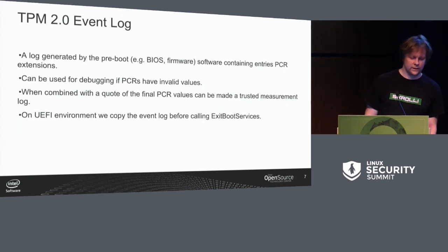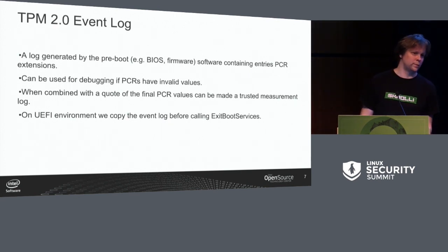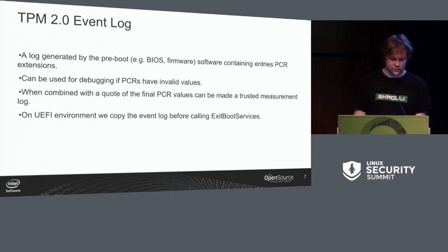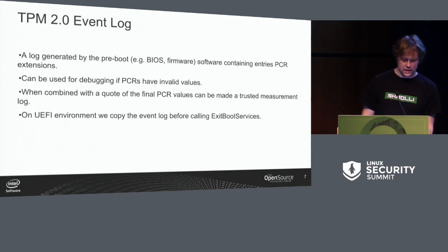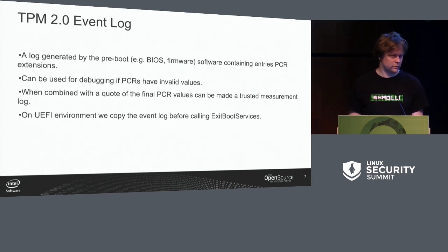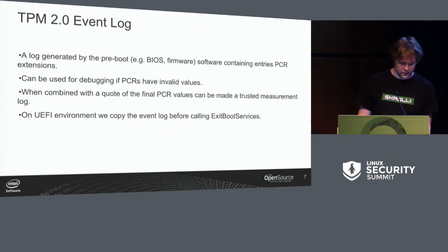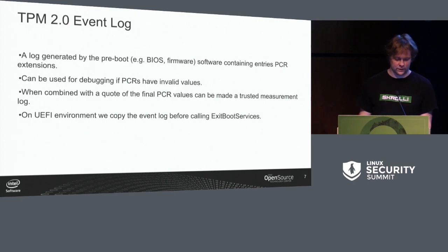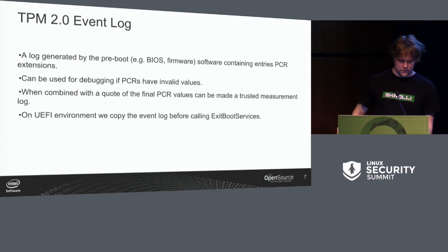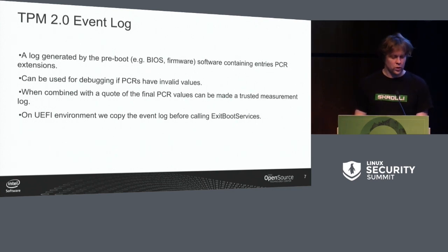The event log is essentially a log maintained or written by the boot software like BIOS, and it contains entries for every PCR extension. It can be used to debug the system if PCRs have invalid values — to find where it went wrong. If an application requires, you can combine it with the final PCR values you get signed from the TPM in order to get a trusted measurement log, because the log given by the BIOS itself is untrusted. But if you have a signed quote of the final values you can combine those two to have a fully trusted log.